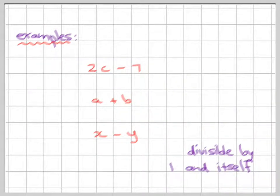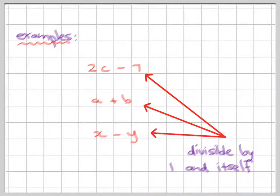Here are some examples. You can see 2c minus 7 is only divisible by itself and 1 because those are both prime numbers and there's only 1c, not a c squared. a plus b is divisible by itself and 1. They're not squares. They're only 1a and 1b. x and y are divisible by themselves and 1. There isn't another one there. It's not x squared and y squared. It's just 1x and 1y.